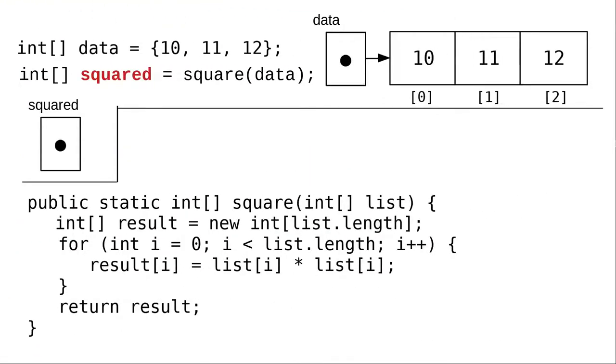Here's how that would work. In the second line, we declare a variable named squared, which will become the result of calling method square with data as the argument.